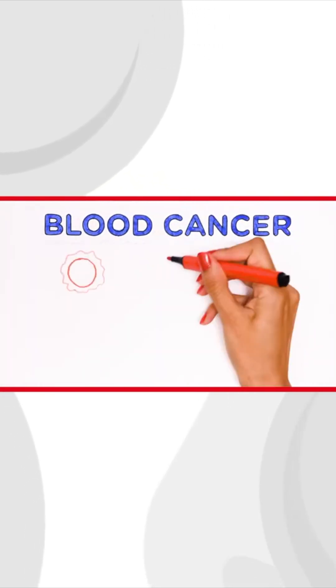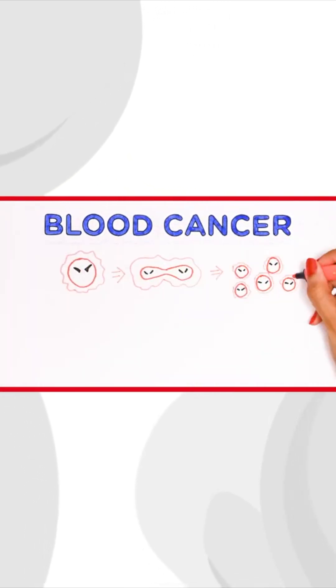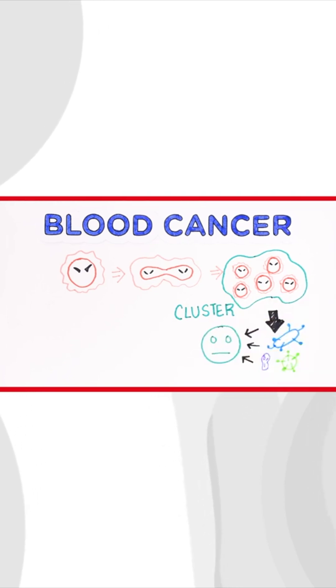Blood cancer, by definition, is an abnormal blood cell multiplying to form a cluster of tissues that hinder the body's ability to fight off infections.